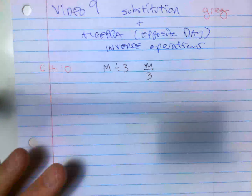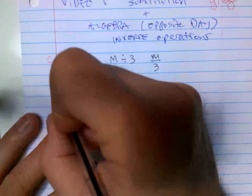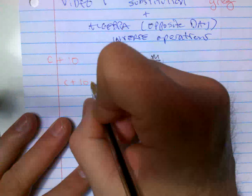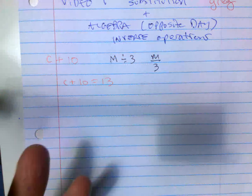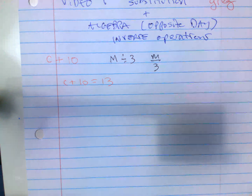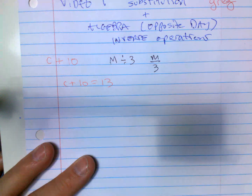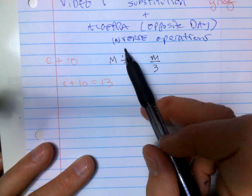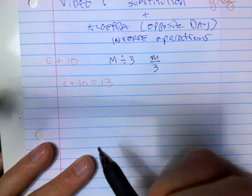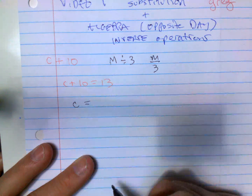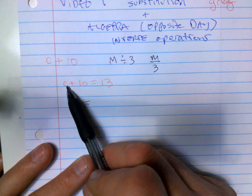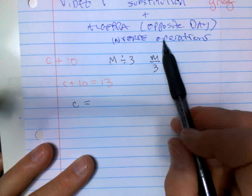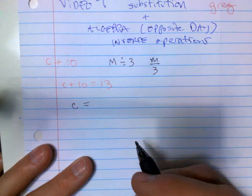An equation would be if they gave you C plus 10 equals 13. That's an equation — I can actually solve that. Algebra means we're going to get the letter by itself. What does C equal? So to do that, we have to get rid of the numbers near the letter. How do you get rid of numbers? You do the opposite inverse operation — we can just call algebra 'opposite day.'